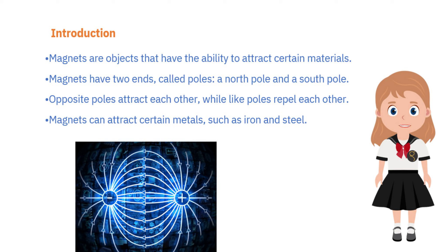Opposite poles pull together, whereas similar poles push each other away. Magnets have the ability to draw in particular metals like iron and steel.